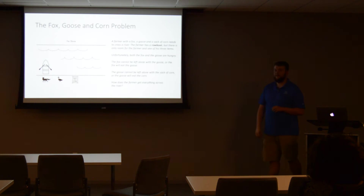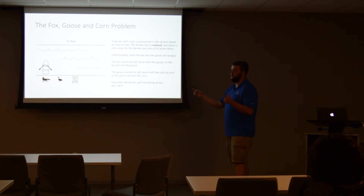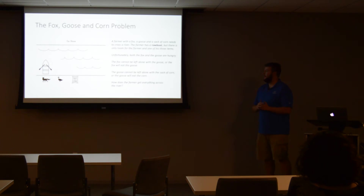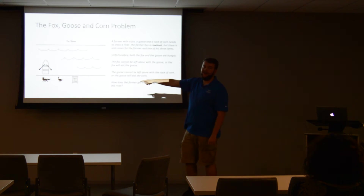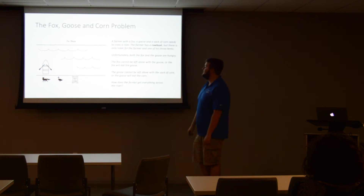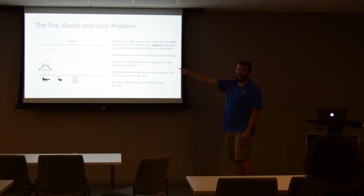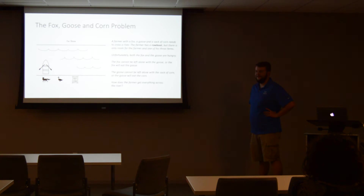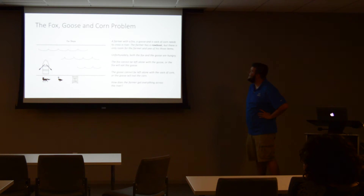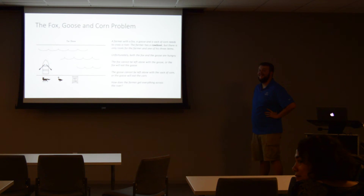What is the next thing we do? Who would be the next to drag across? The goose is over there. We take the corn over — now we come back, and the goose is eating the corn. So we take the fox across, and now we come back, and the fox is eating the goose. There's a constraint you're assuming that isn't there. Take the goose back across. There you go — you just got it.